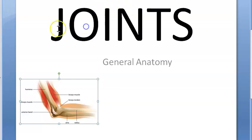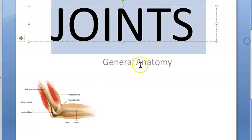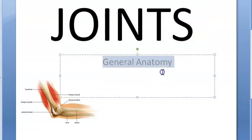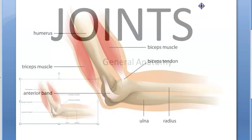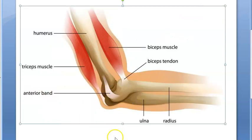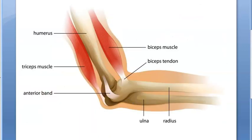Hello people, we are looking at joints in this video. Joints is a topic under general anatomy. Look at this image here and just tell what you see here. Yes, this is an elbow joint and this is the right elbow joint.